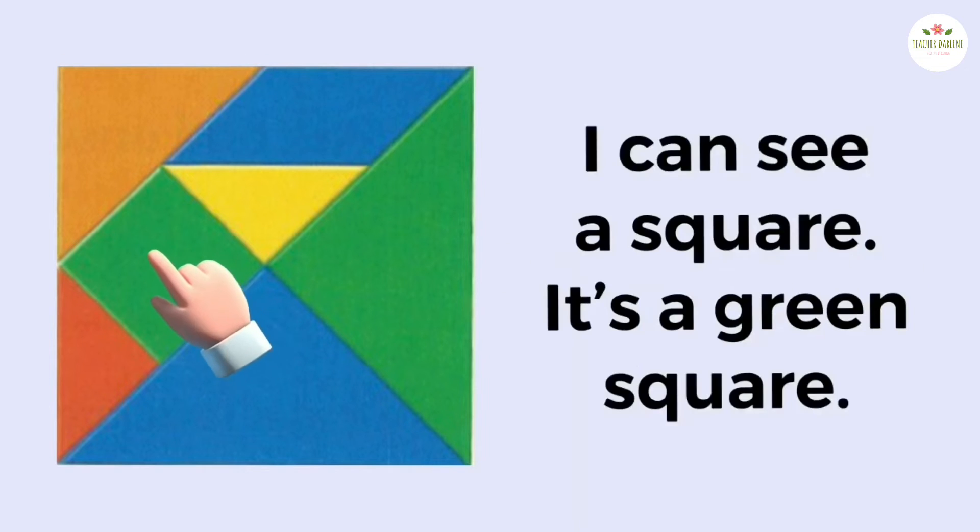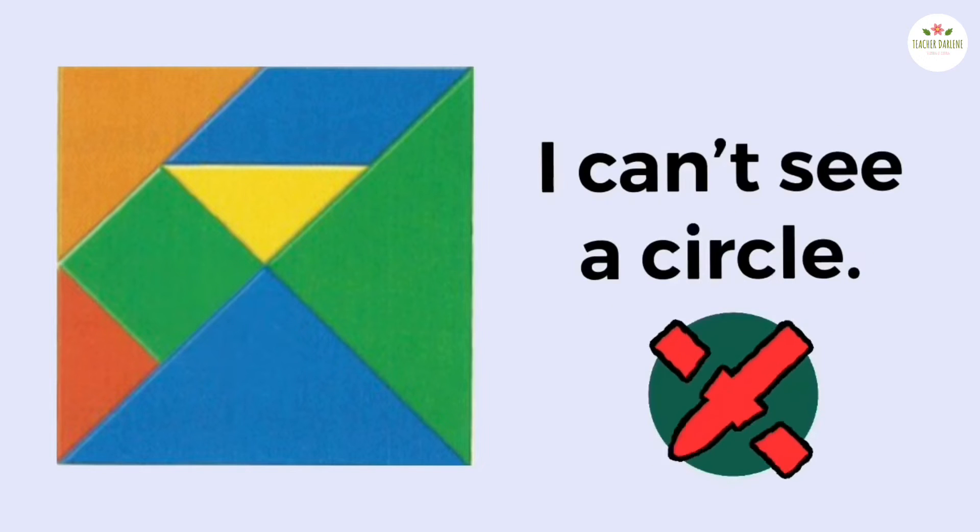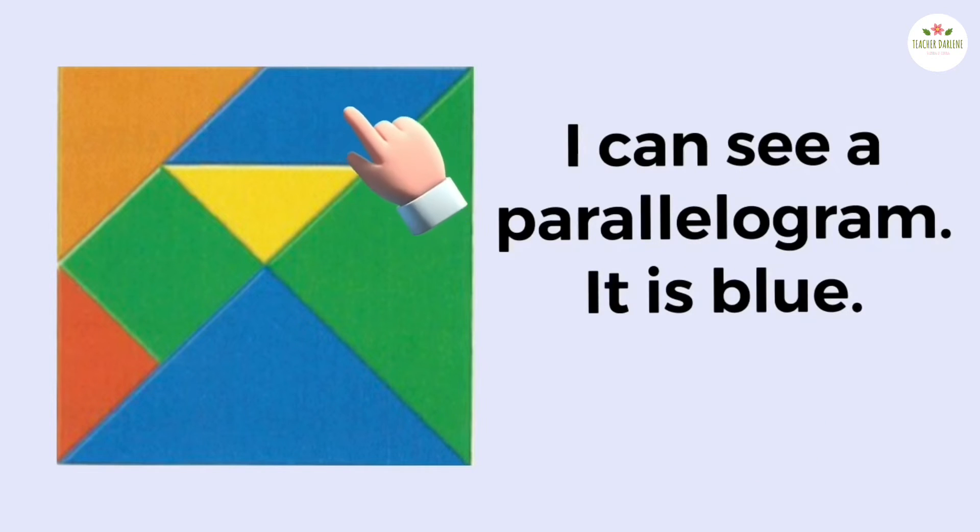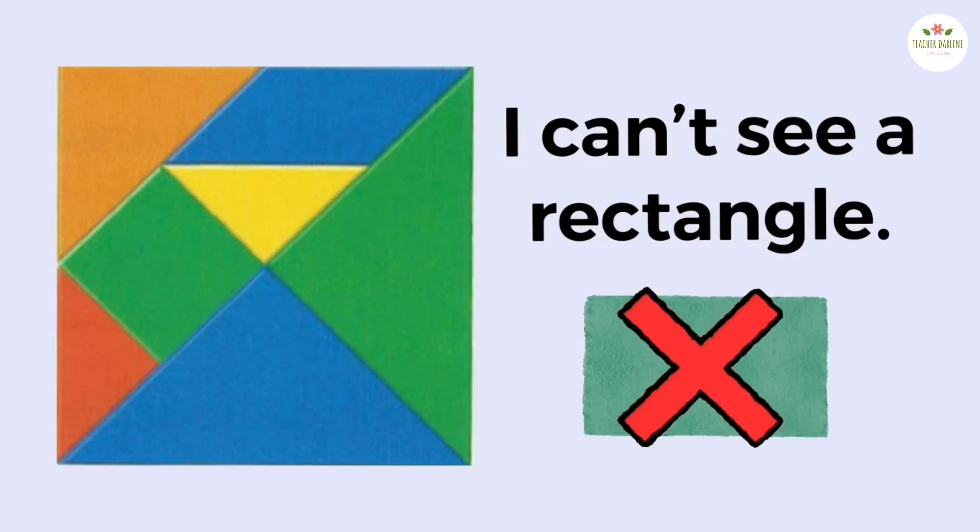I can see a square. It's a green square. I can't see a circle. I can see a parallelogram. It is blue. I can't see a rectangle.